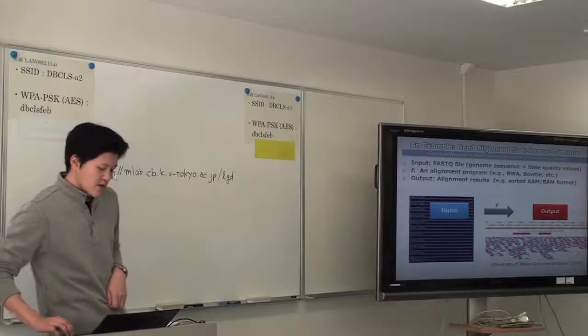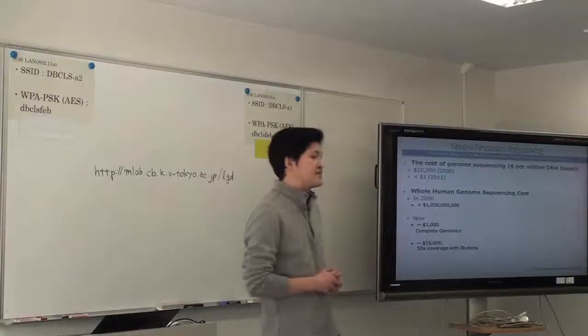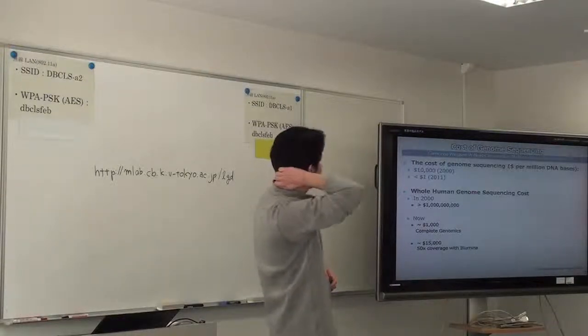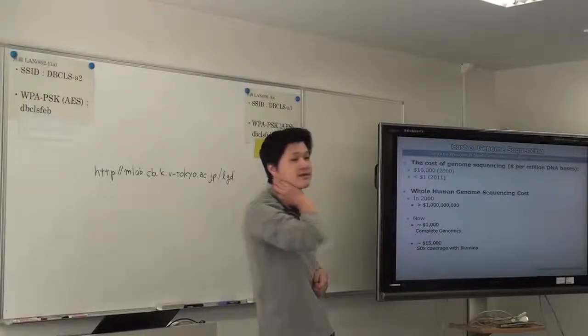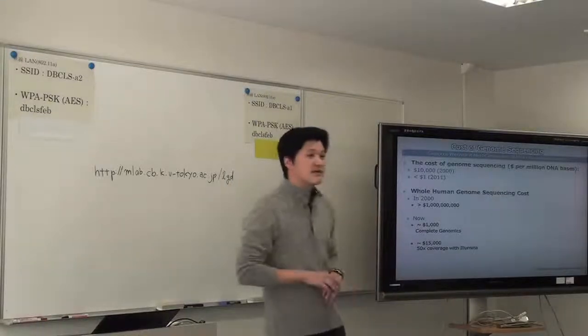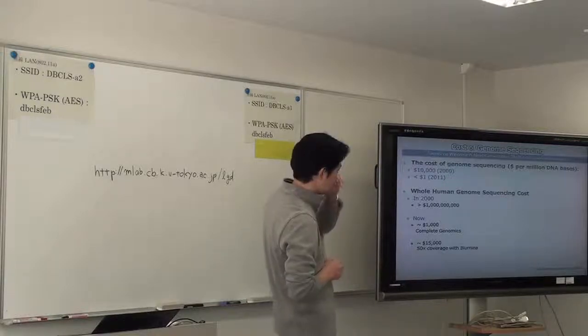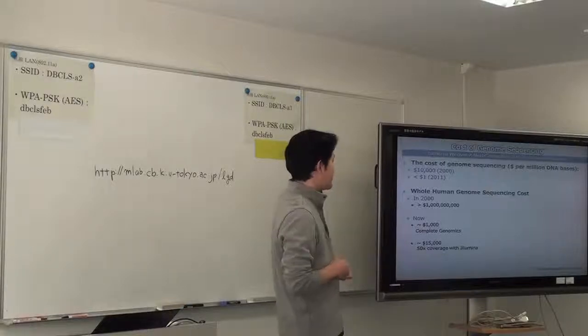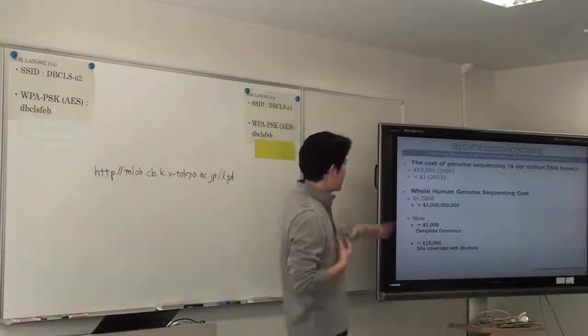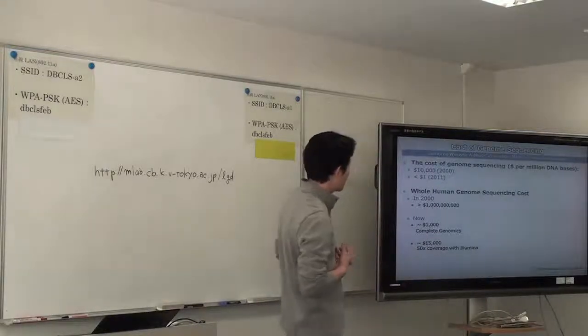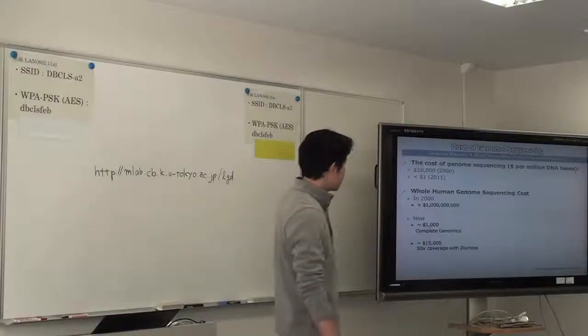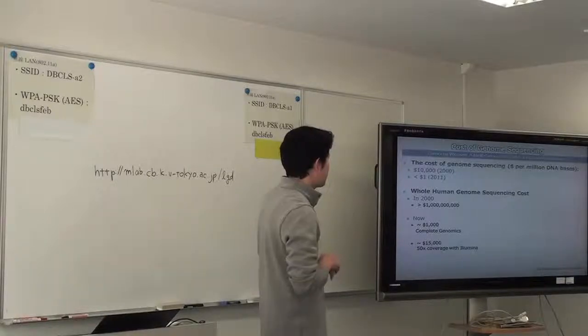Then, to show what kind of data will be produced by the next generation sequencer, the cost of genome sequencing has reduced. So in 2000, the cost of genome sequencing is $10,000 for 1 megabase of DNA. But the cost dropped sharply in 2010 or 2011. So the cost is already $0.10 per megabase. So if we want to read our genome, the whole human genome sequence, in 2000, the human genome project spent much much money, more than one billion dollars, to decipher genome sequences. But now we can read our genome for less than one thousand dollars.